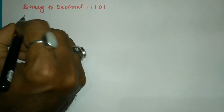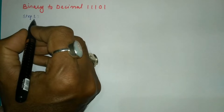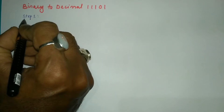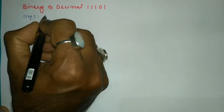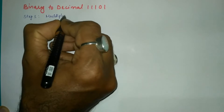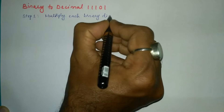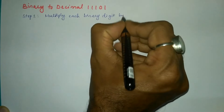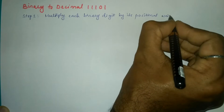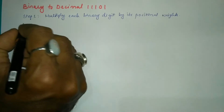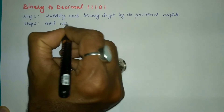In order to convert this given binary number into a decimal number, we have to follow a procedure. The procedure is divided into steps. Step 1: multiply each binary digit by its positional weights. Step 2: add all the products.